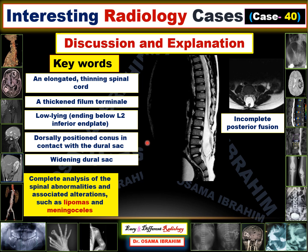These are the key findings to diagnose this congenital anomaly of the spinal cord in this boy. You should also complete analysis for associated alterations such as lipomas and meningocele, which can be seen in that region. Lipomas can be diagnosed on T2 as a high signal sac in the posterior element bulging outside the boundaries of the dural sac.